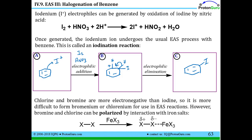It's more difficult to make Cl+ or Br+ compared to I+, because chlorine and bromine are more electronegative than iodine. So to get the addition of a chlorine or bromine to a benzene ring when we can't easily make Cl+ or Br+, the best we can do is polarize the chlorine or bromine.